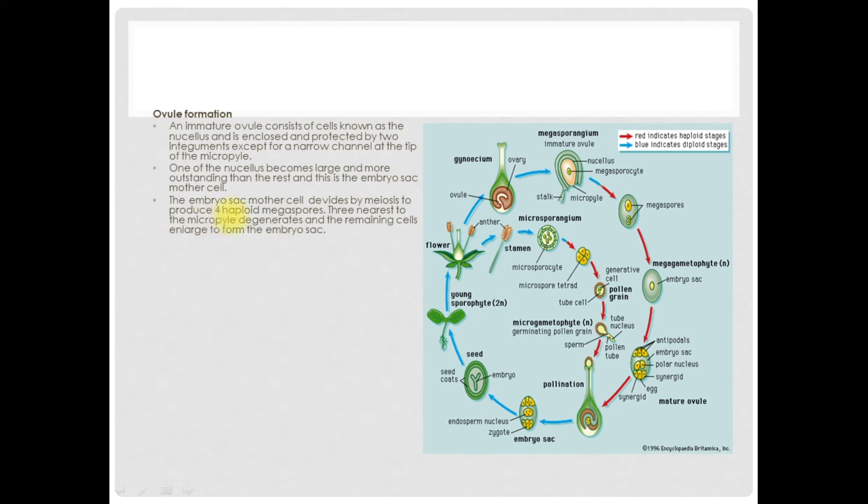The embryo sac mother cell divides by meiosis to produce four haploid megaspores. Three nearest to the micropyle degenerate, and only one will remain.